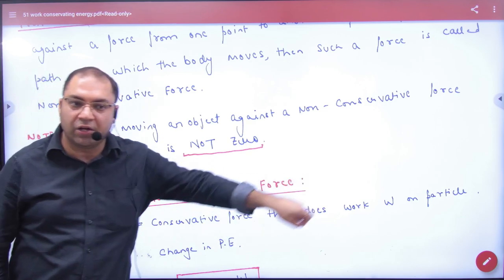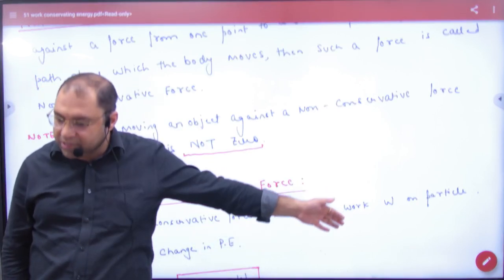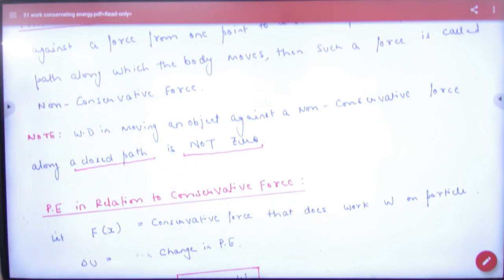Aane aur jane ka non-conservative mein work done zero nahin hooga. Hamein friction mein dekha minus 2F×S zero nahi tha. To yeh important, clear hai?